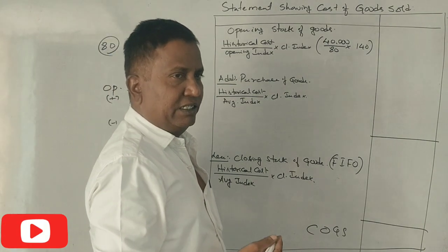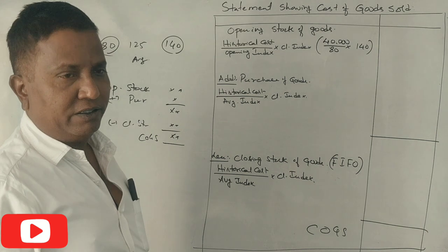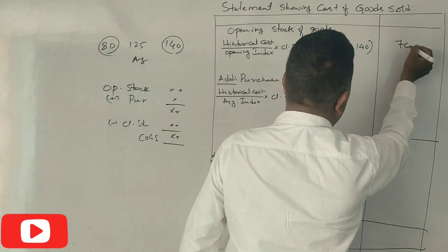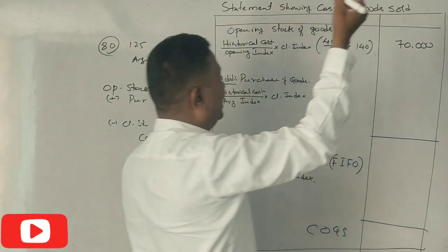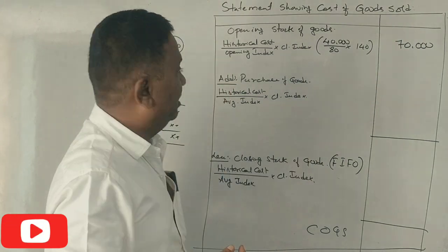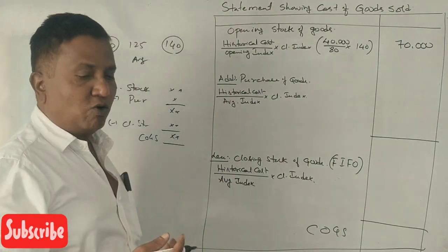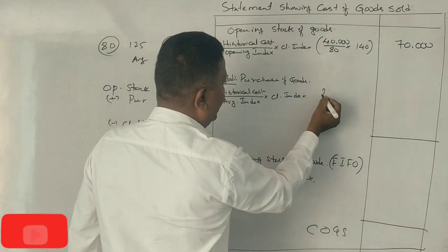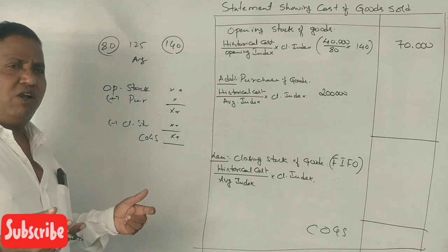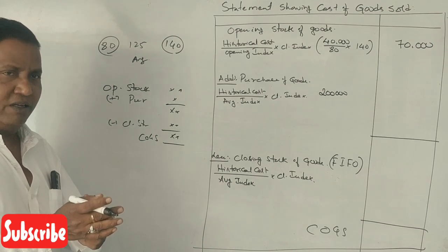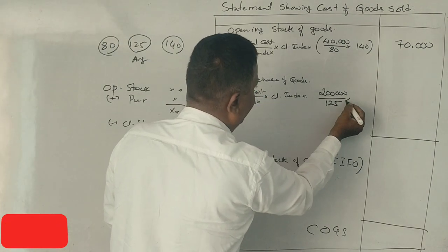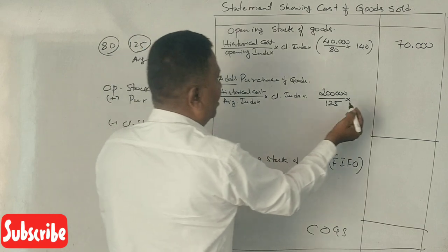The closing stock is $150,000 at historical cost. The adjusted figure comes to $50,000. The opening stock is $70,000. Purchases were made in the middle of the year, so the average index is 125, and the closing index is 140.